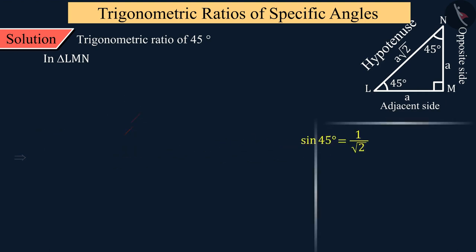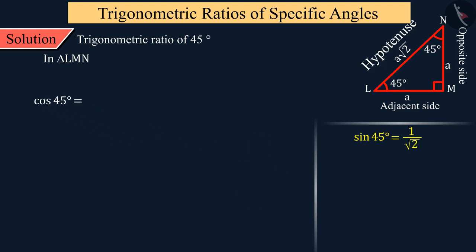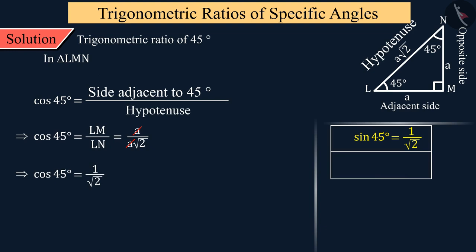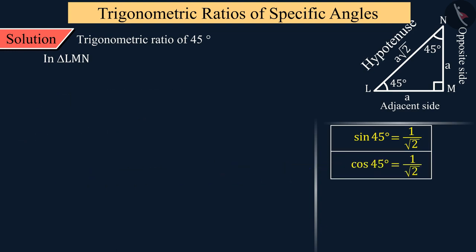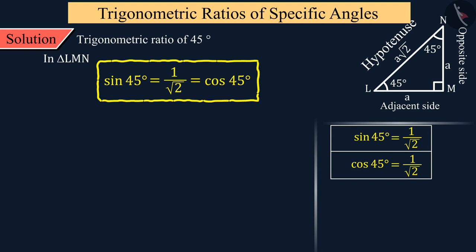Now, what will be the value of cos 45 degrees? For this, we find the ratio of the adjacent side to the hypotenuse for angle L. On solving this, the value of cos 45 degrees is also 1/√2.